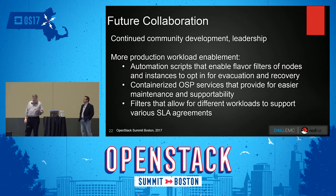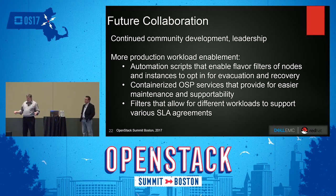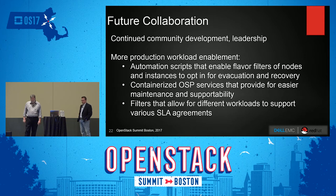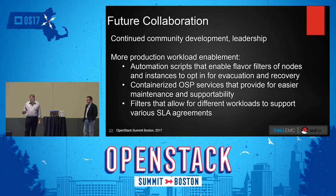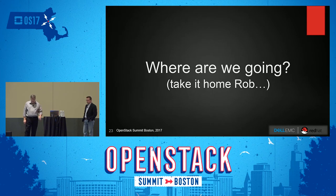Some of the future work we're working on includes automation scripts that enable flavors and filters of nodes and instances to opt in for evacuation — right now it's a manual process. Also containerizing OSP services, which is what Rob's team is working on — looking at how to containerize OpenStack services, especially for Red Hat. And we want to explore what kind of filters would allow different workloads to support various SLA agreements — for instance, large, small, and medium production systems — and whether filters could tie to different service level agreements so you can charge different prices for those instances.